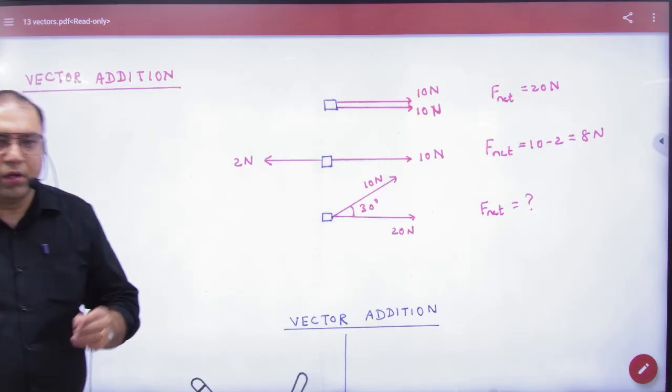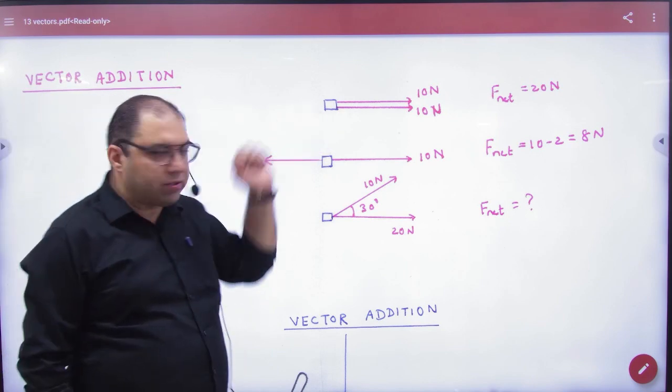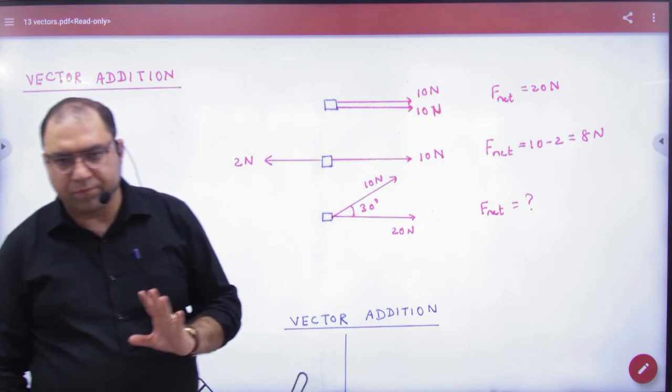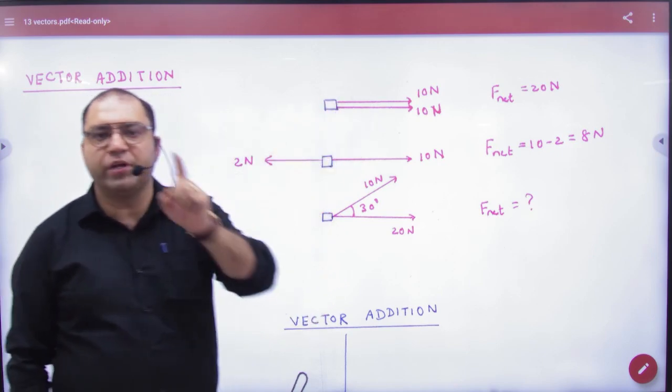Vector addition. You have a very practical problem: there is a box. One student puts force on this 10 newton, the other one puts force on this 10 newton. What was the net force?